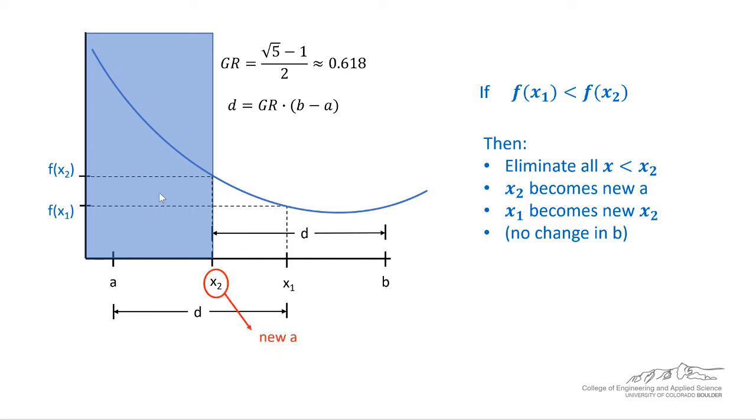then x2 becomes the new a. We don't have to do anything with b. There's no change in b. And the way the math works out, x1 actually becomes the new x2. But this is not as important. The golden ratio was used because it minimized the math involved because you could just simply take x1 and use it for the next x2. But we're not really limited by processing speed, so we're just going to recalculate x1 anyway.